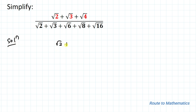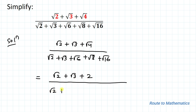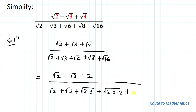We have root 2 plus root 3 plus root 4, divided by root 2 plus root 3 plus root 6 plus root 8 plus root 16. In the next step, root 4 is nothing but 2. Root 6 can be written as root of 2 multiplied with 3. Root 8 can be written as root of 2 multiplied with 2 multiplied with 2, because 8 is nothing but 2 cubed. Similarly, square root of 16 is nothing but 4.